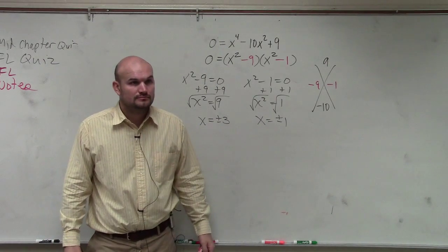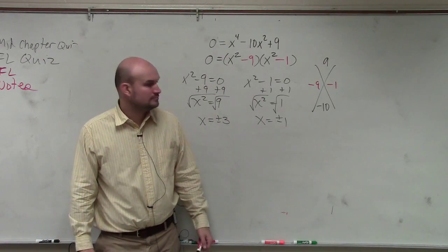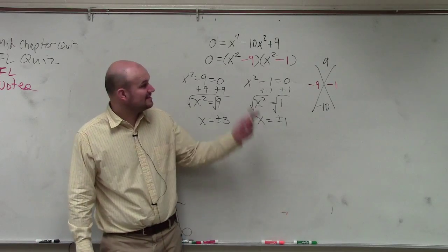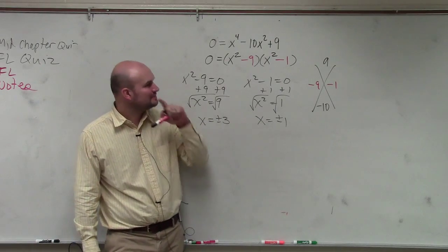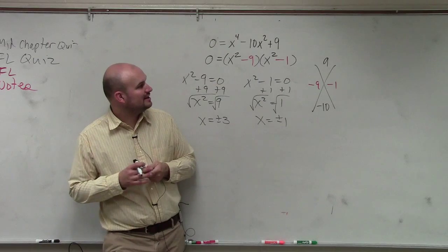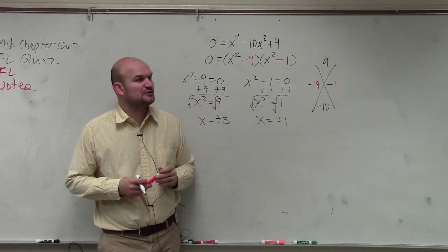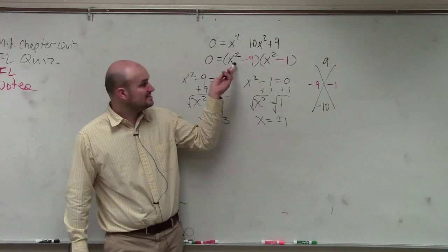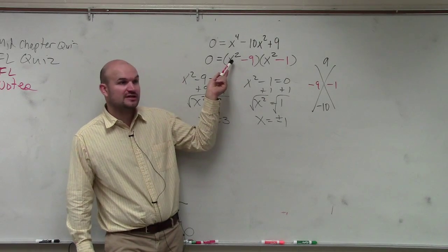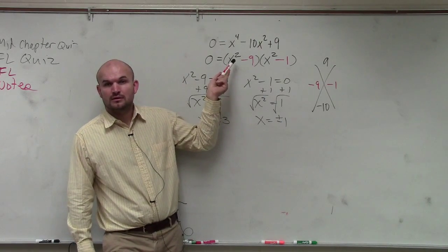So would that mean that it would be like x squared times 1? If you're going to write this, OK, well, good question. So that's a really good point. Because let's say I was going to say, hey, what is the multiplicity of your zeros? Is this, are these factors in linear form? No.